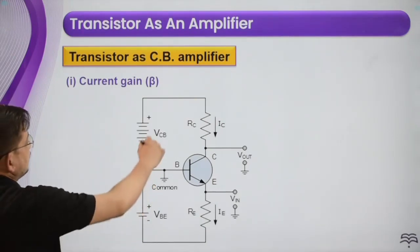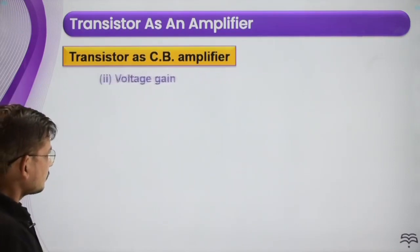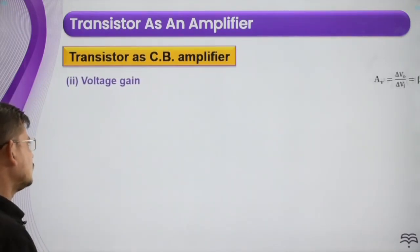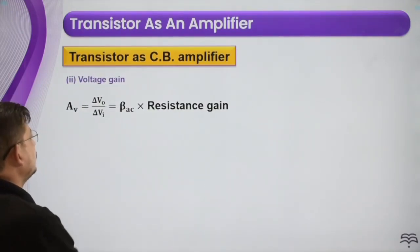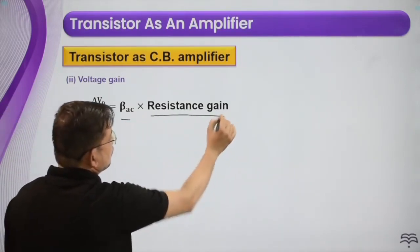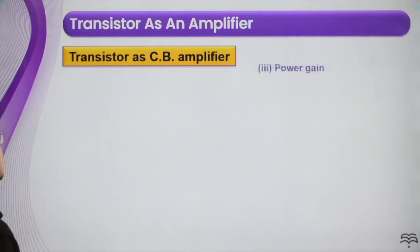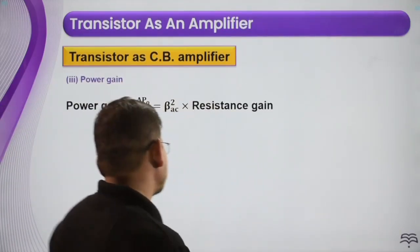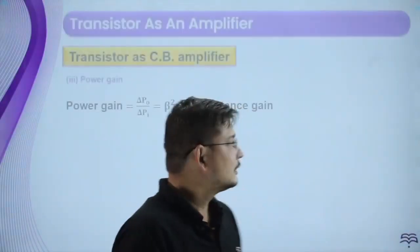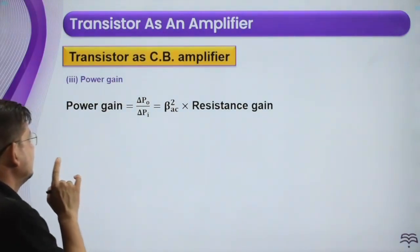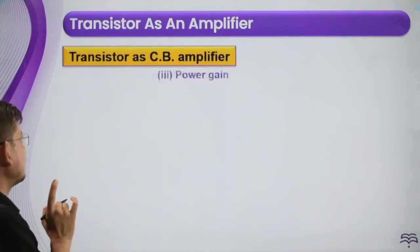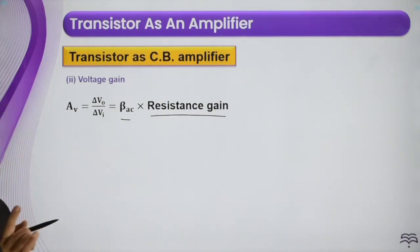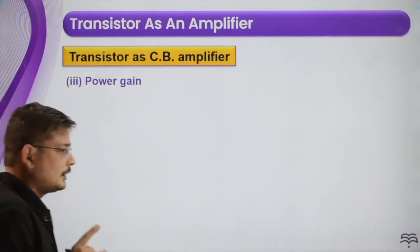For the common base amplifier, the voltage gain is given as beta AC into resistance gain. Similarly, the power gain is given as beta AC squared into resistance gain. We now have to compare the common base and common emitter configurations.